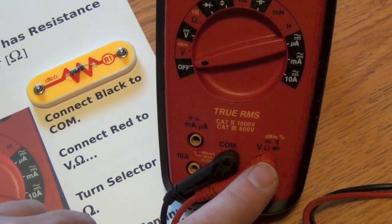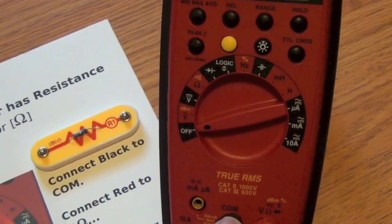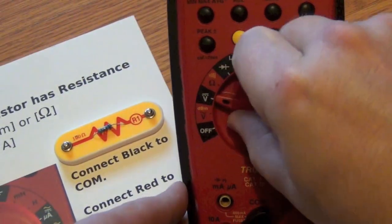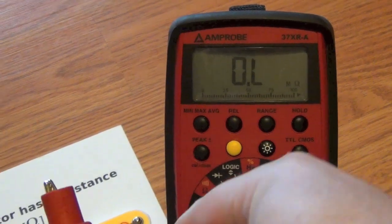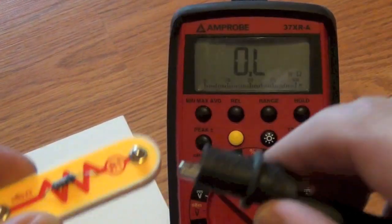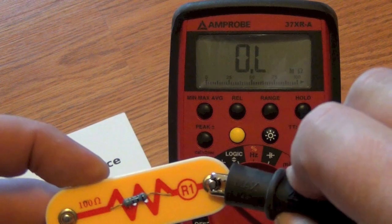We already have the wires connected to ohms and com. Then we turn the selector to ohms and connect our leads to the resistor. Here's a sample resistor.